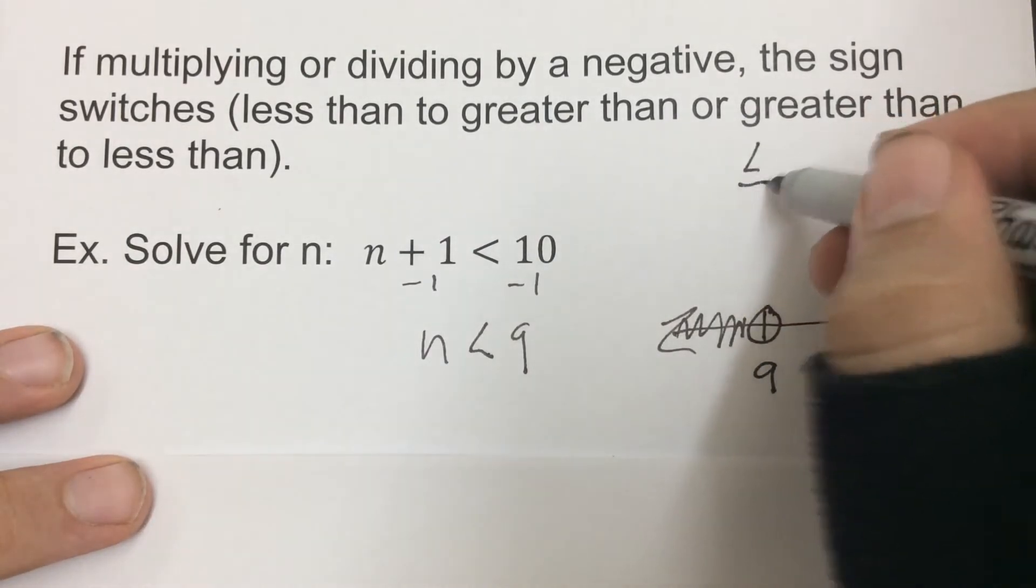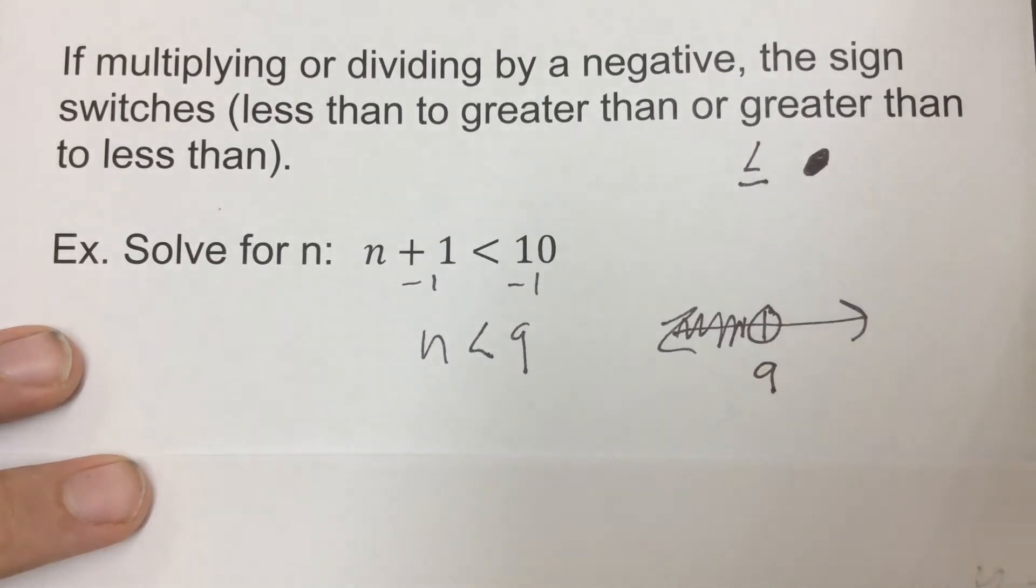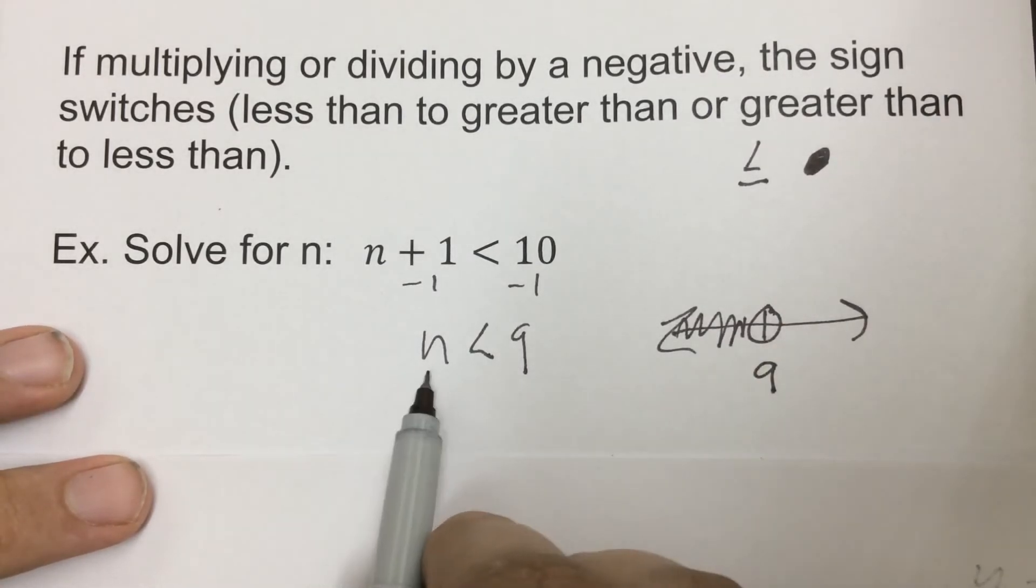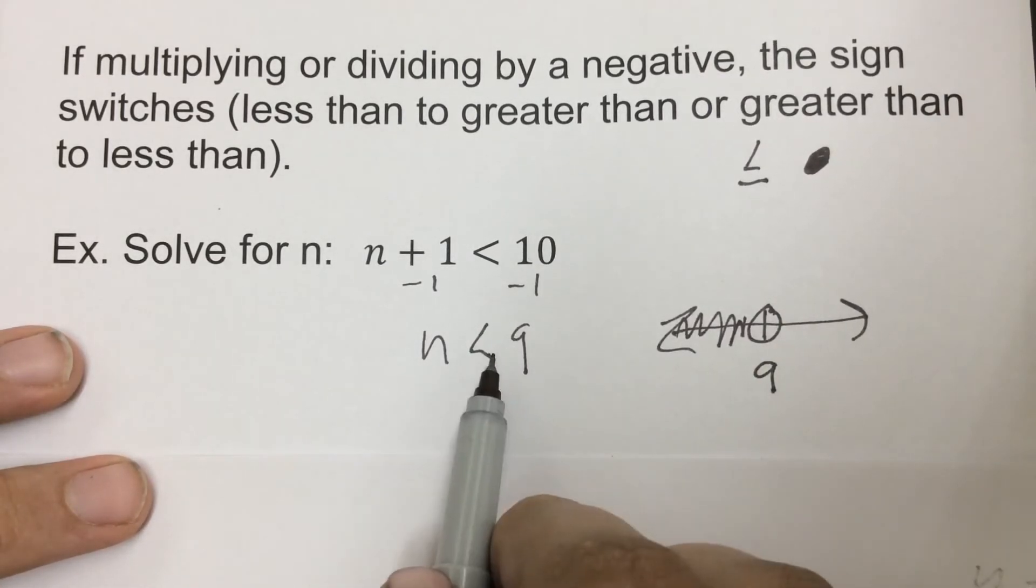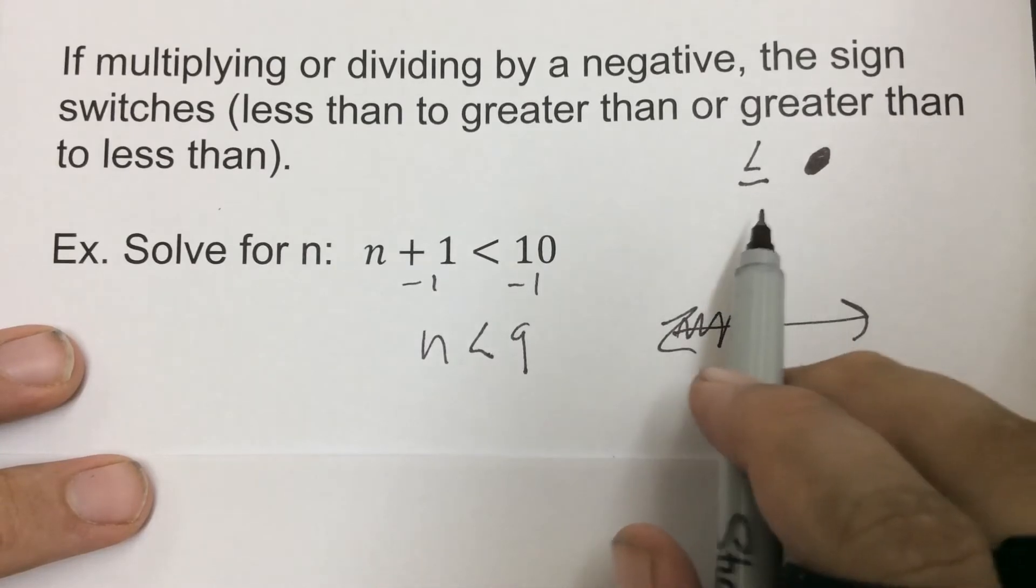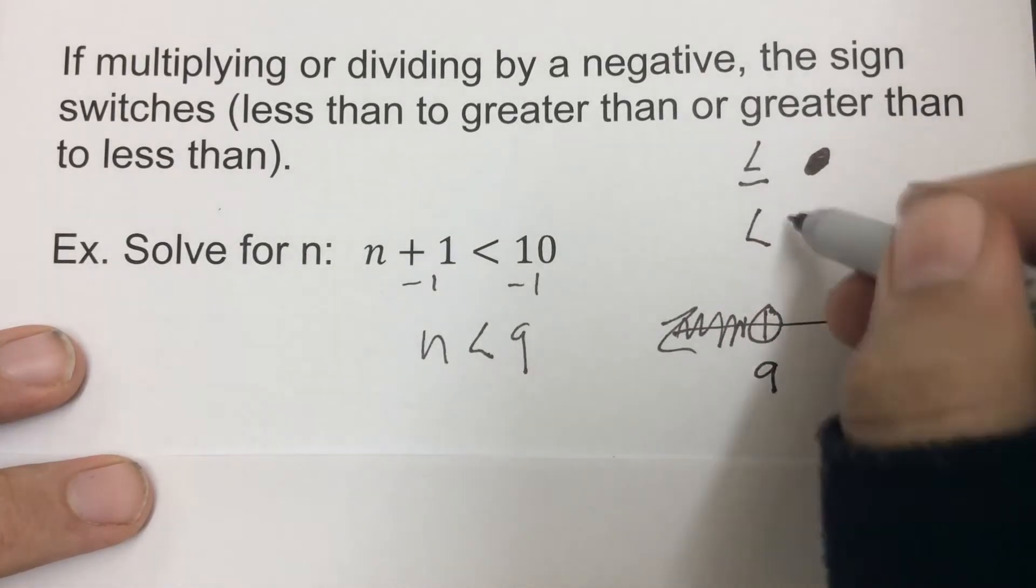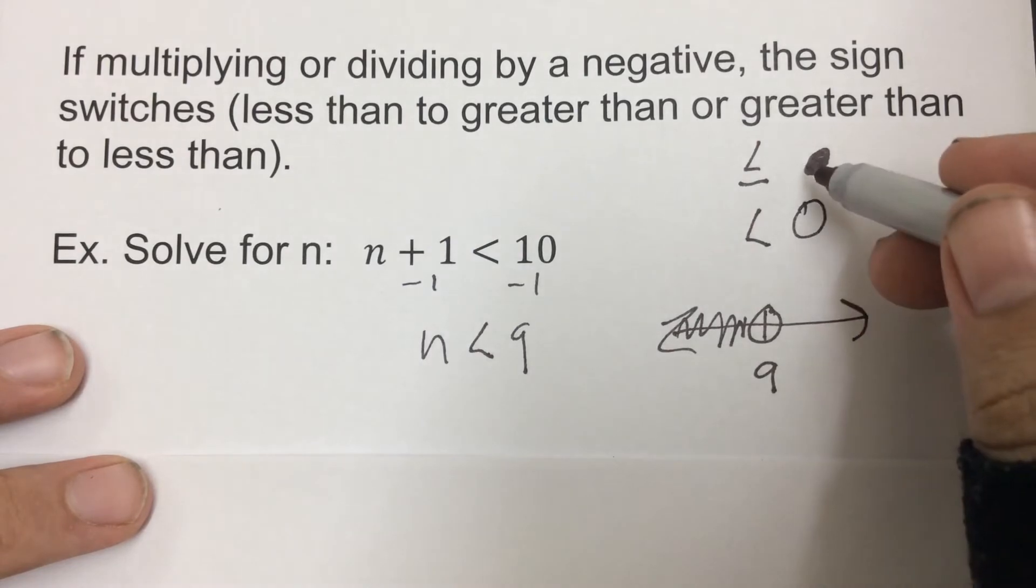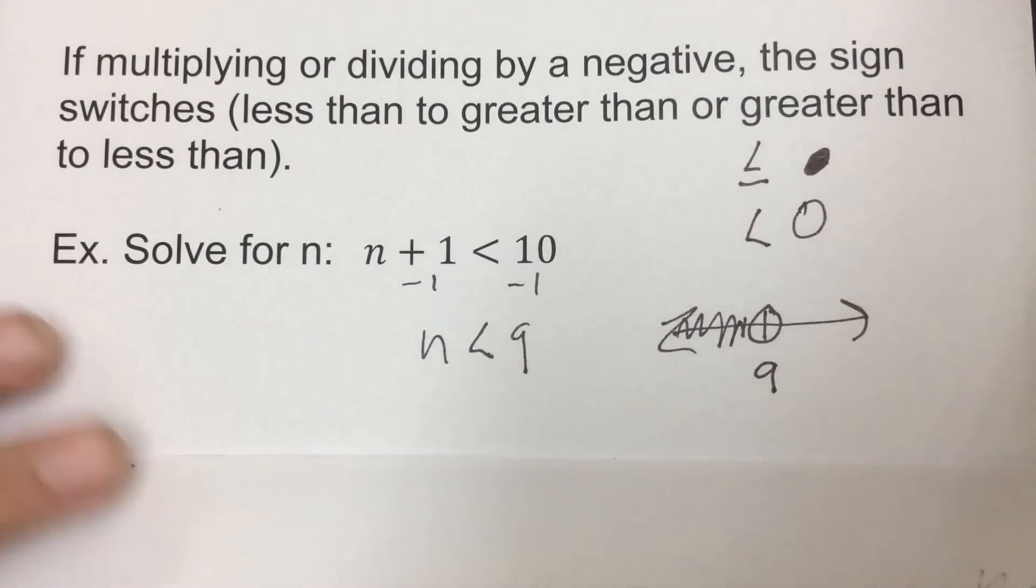If it was less than or equal to, then it's going to be a closed circle. But we always want to have the letter on the left, and then we're going to shade the way that it points. So just less than: open circle. If it was less than or equal to: closed circle. So here, being less than, an open circle.